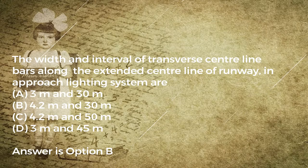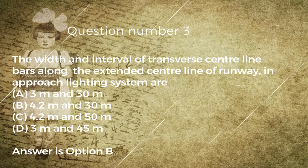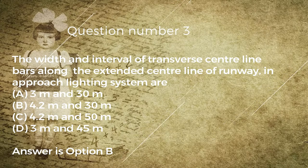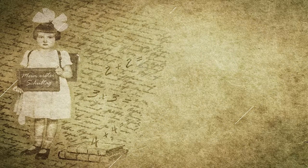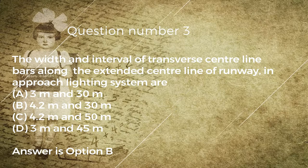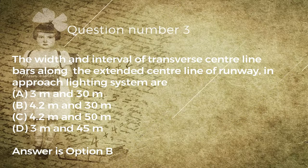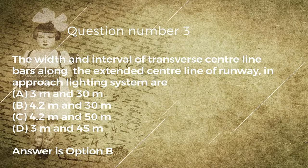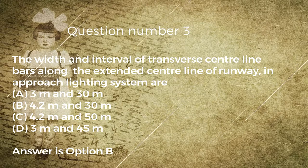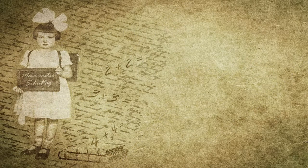Question number three: the width and interval of transverse center line bars along the extended center line of runway in approach lighting system are: A) 3 M and 30 M, B) 4.2 M and 30 M, C) 4.2 M and 50 M, D) 3 M and 45 M. Answer is option B.